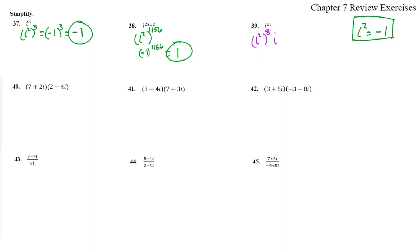i squared, so this is negative 1 to the 8th power times i. Negative 1 to the 8th power is 1 times i. So this reduces down to i. Excellent.